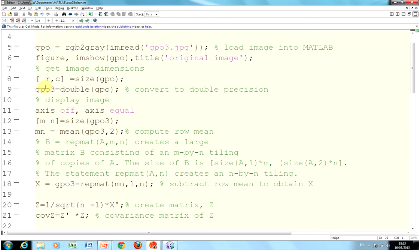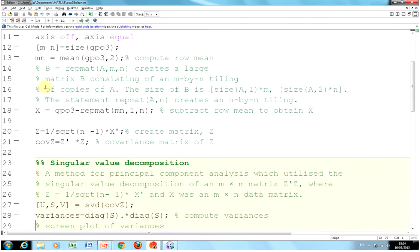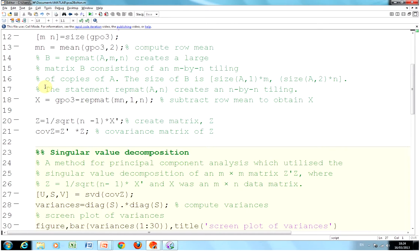On line 20, we got the matrix Z, and then on line 21, we got the covariance matrix. On line 27, we got U, S and V, fairly standard notation, and S is the eigenvalues. U and V are one is the transpose of the other, and they're the eigenvectors.